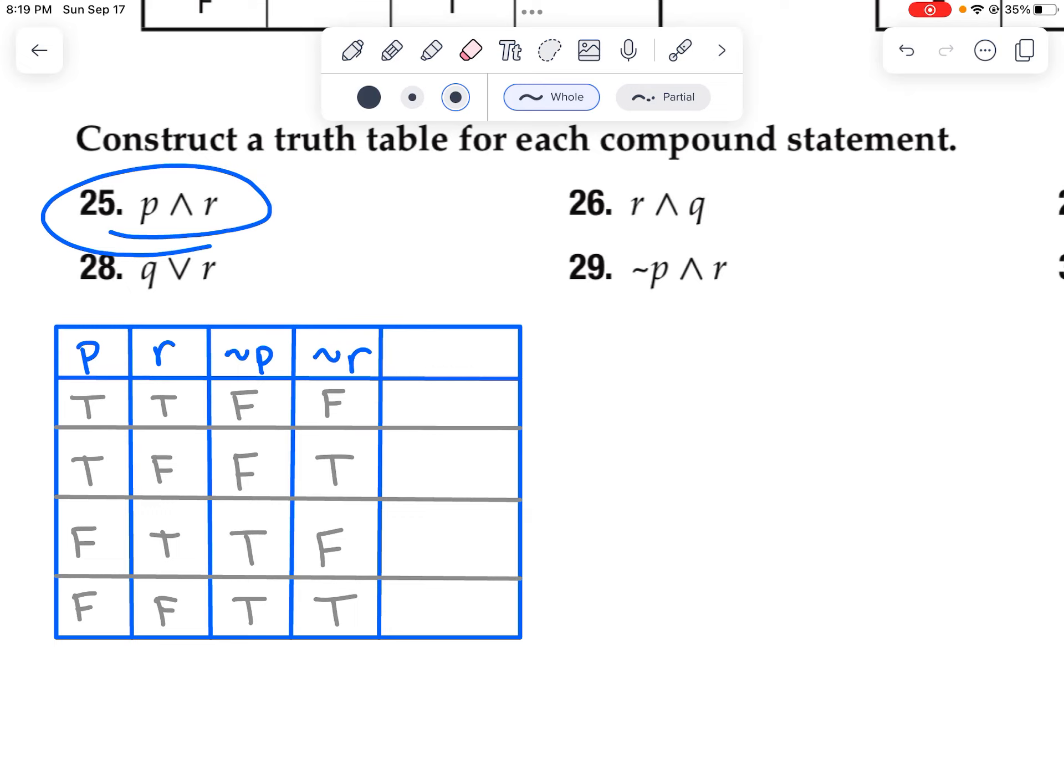What if I wanted, let's say, let's go with problem 29. Let's change it up. If I wanted 29, which is not P and R.